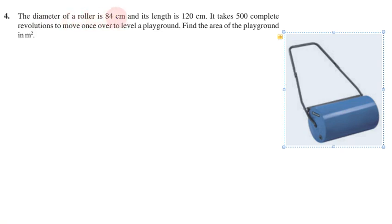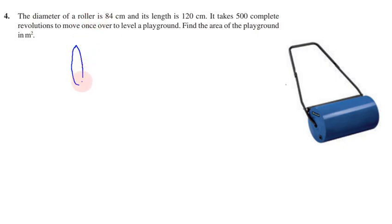The diameter of your roller is 84 cm and its length is 120 cm. It takes 500 complete revolutions to move once over to level your ground. Find the area of the playground. So diameter of your roller, so roller.